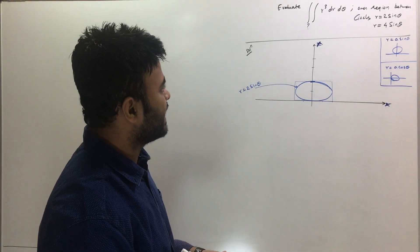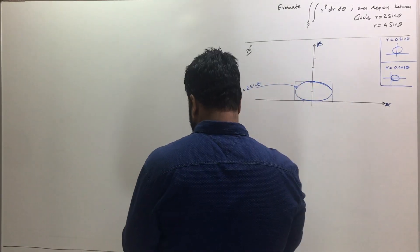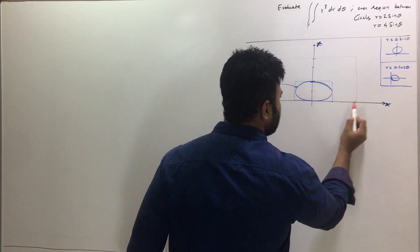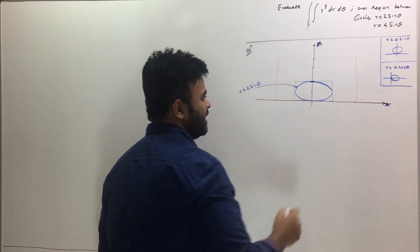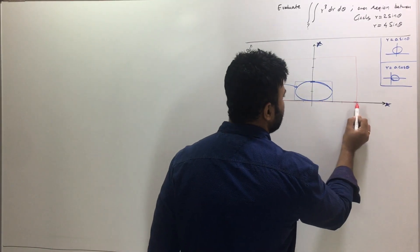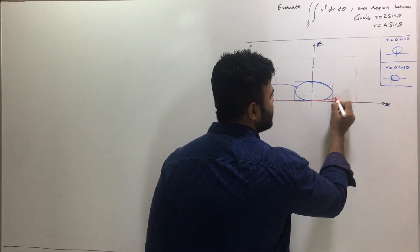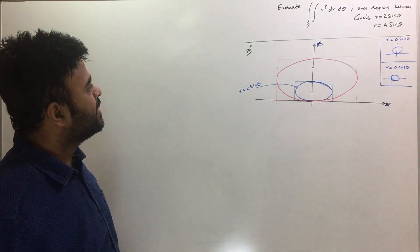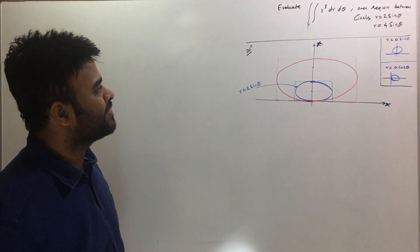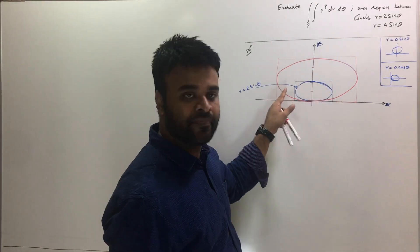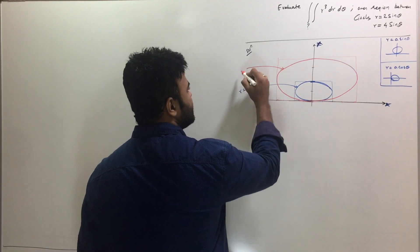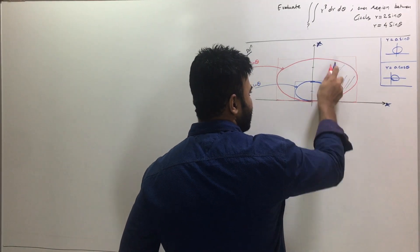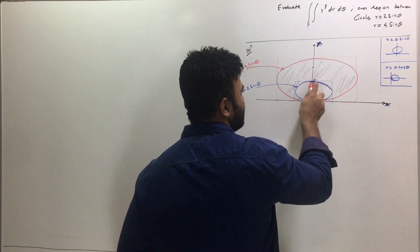Now let me quickly draw r = 4sinθ as well. r = 4sinθ is a circle with diameter 4, so it approximately fits in a 4×4 square. Within that square I draw the larger circle. The integral is to be evaluated over the region between the blue and red circle, which is this shaded region. The equation of the red circle is r = 4sinθ.